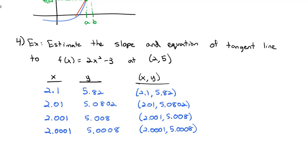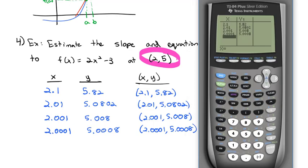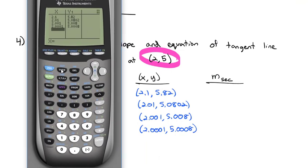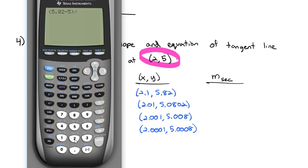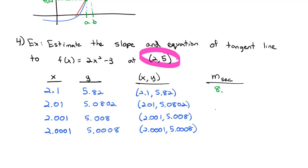We're going to use the calculator to help with the calculations. Hit Second Quit to go back to the home screen. Then type in our slope formula with the numerator and denominator in parentheses. For the first point: (5.82 − 5) / (2.1 − 2). When we hit enter, we find our slope is 8.2.